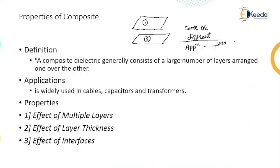For example, in a transformer, conductors are surrounded by paper and then immersed in oil, so there are two dielectrics: paper and oil. It is not compulsory that the same dielectric be used; different dielectrics can be combined depending on the electrical application. Composite dielectrics are required in many cases like cables, capacitors, and transformers.